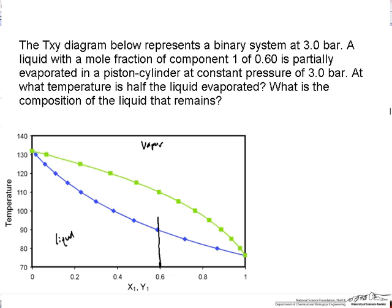That will be where according to the lever rule we have an equal length to the liquid side of the phase envelope and the vapor side of the phase envelope. That looks like it's about where I've shown it on the plot.